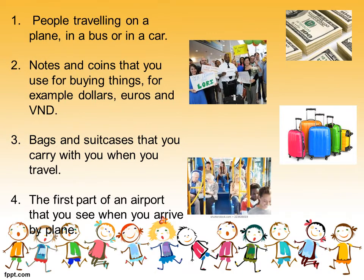Number one: a person traveling on a plane, in a bus, or in a car. Number two: notes and coins that you use for buying things, for example dollars, euro, and Vietnamese dong. Number three: bags and suitcases that you carry with you when you travel. Number four: the first part of an airport that you see when you arrive by plane.